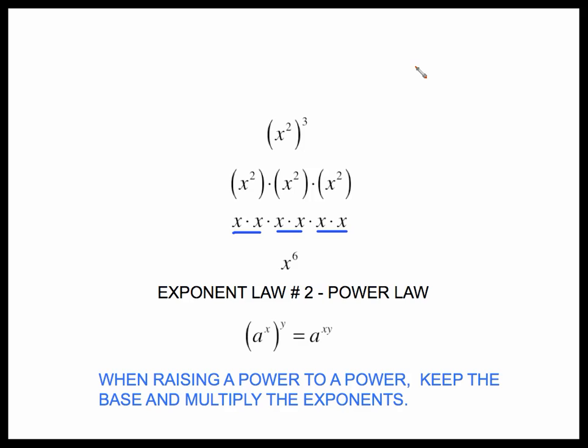This is exponent law number two called the power law and it just says if you are raising a power to a power, keep the base just like we did in the first rule, keep the base but this time multiply the exponents. In words, when raising a power to a power you keep the base and multiply the exponents.